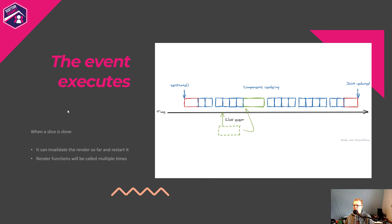Does that mean you get partial DOM updates? No — this is just the render phase, which determines the virtual DOM. The actual updating of the DOM — diffing and applying changes — is still an atomic phase at the end, so you'll never have a partial DOM update. However, you have to be more careful: if you haven't been careful with useEffect dependencies, the component being rendered multiple times might cause multiple fetch requests or side effects firing multiple times.